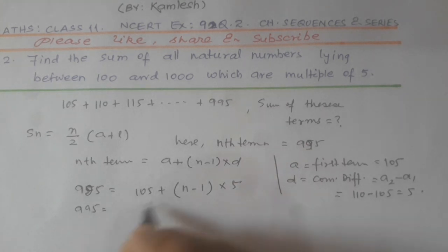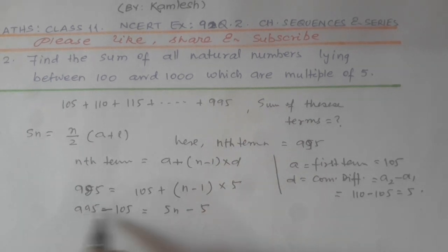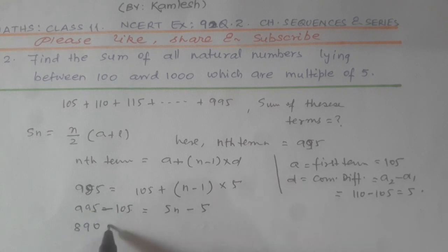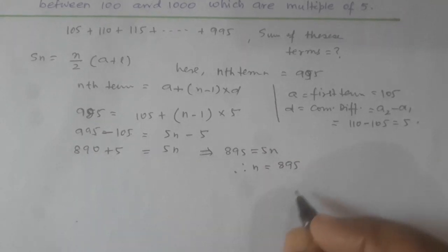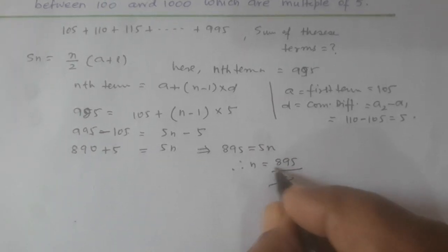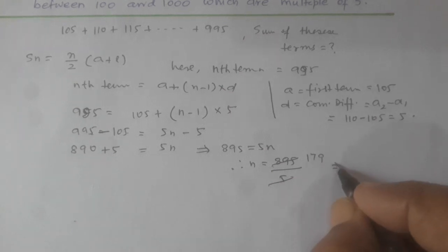So we put 995 equals 105 plus (n minus 1) times 5. This gives us 995 equals 105 plus 5n minus 5. Simplifying: 995 minus 105 equals 5n minus 5, so 890 plus 5 equals 5n, which means 895 equals 5n. Therefore, n equals 895 divided by 5, which is 179.